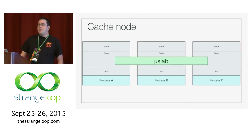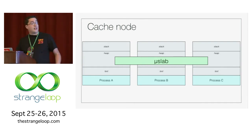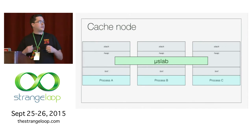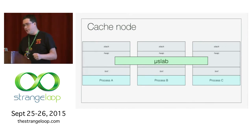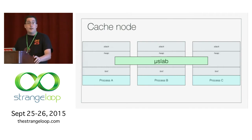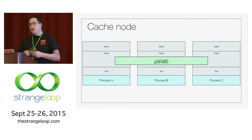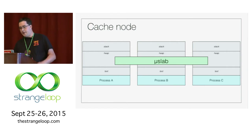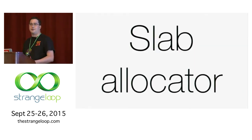So we implemented a concurrent allocator called microslab. It allows us to do just this — it's a shared-state memory allocator that works concurrently between processes. The talk today is an exploration of how you get from the idea of doing this to making something that performs predictably under high concurrent load. As you might have guessed by the name, microslab is a slab allocator.